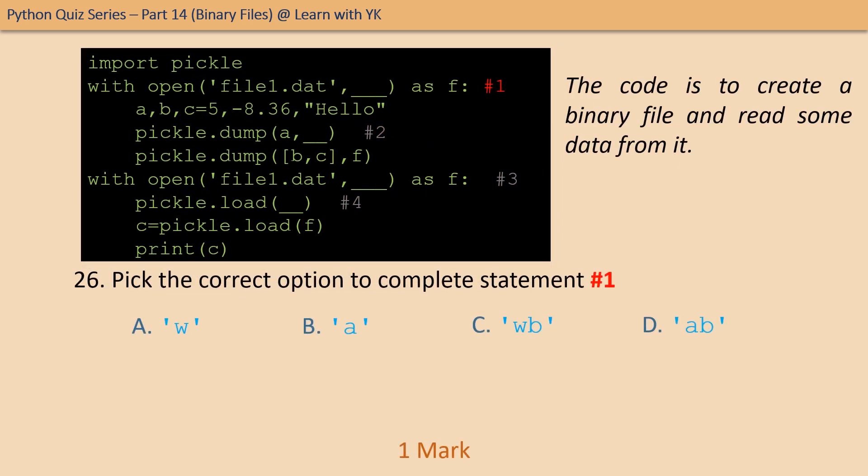Question number twenty-six: pick the correct option to complete statement number one. The correct option is option C — the file has to be opened in wb mode because we want to create the file.